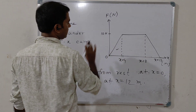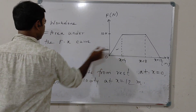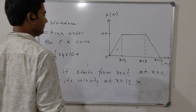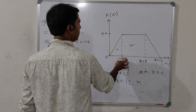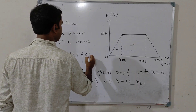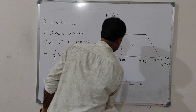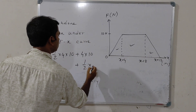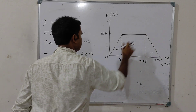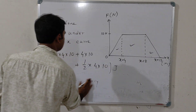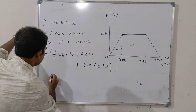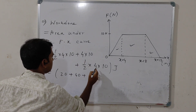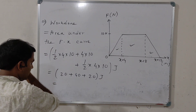Work done from the figure equals the area under the F-x curve. The first region is a triangle: area is half into base into height, base is 4 and height is 10. The second region is a rectangle: area is (8 minus 4) into 10, which is 4 into 10 equals 40. The third region is again a triangle: half into base (12 minus 8, that is 4) into height 10.